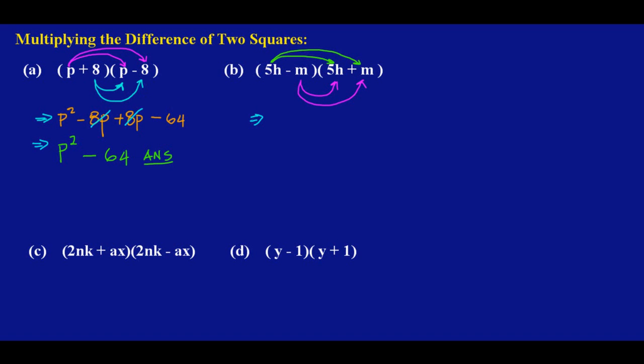So this implies that 5h times 5h, so I'm going to multiply 5 times 5 is 25, and h times h is h squared. And then I have 5h again, I'm going to multiply that with m, so I'm going to have a positive times a positive will give me a positive 5hm.